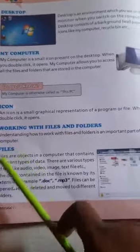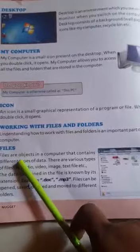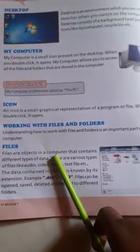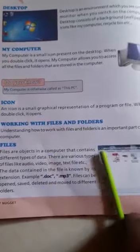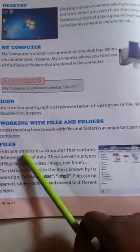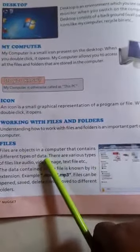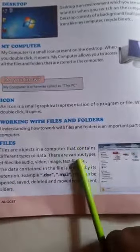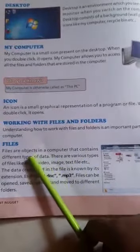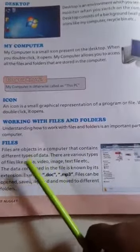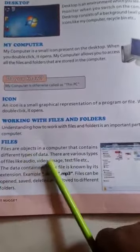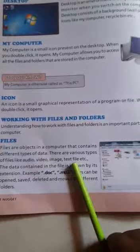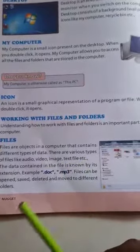What are files? Files are the objects in a computer that contain different types of data. There are various types of files like audio, video, image, text file, etc.